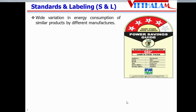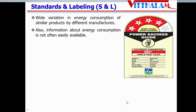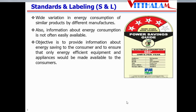Standards and labeling: as we know, there is a wide variation in energy consumption of similar products from different manufacturers. Also, the information of energy consumption is not readily available to the consumer. This leads to continued manufacture and purchase of inefficient equipment and appliances. So the objective of this program is to provide information to the consumer about energy saving and to ensure that only energy-efficient equipment and appliances will be made available to the consumer.